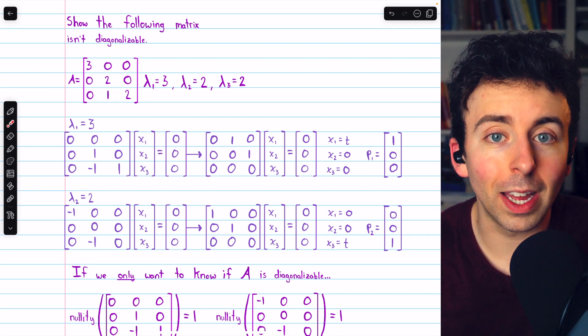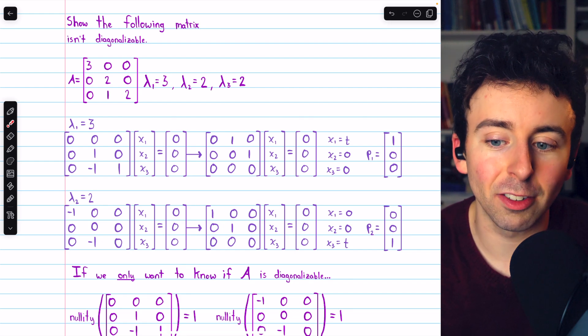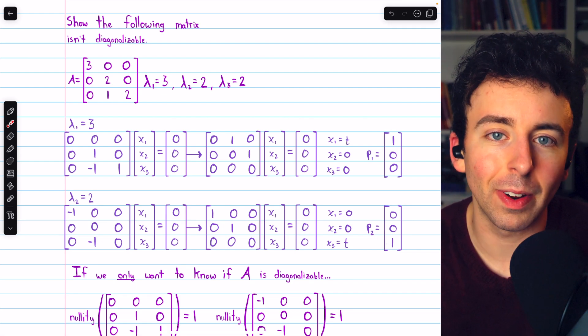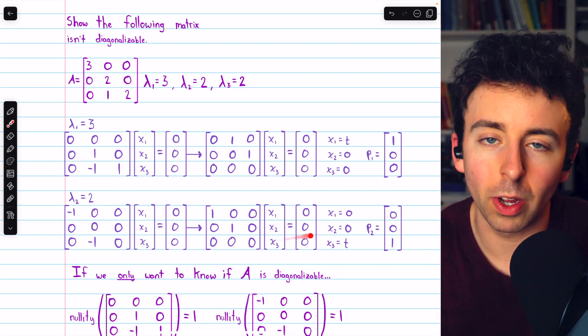If we didn't know that from the start though, then maybe the matrix was diagonalizable, in which case it certainly would be helpful to have those eigenvectors, which is why you might just want to do it this way.